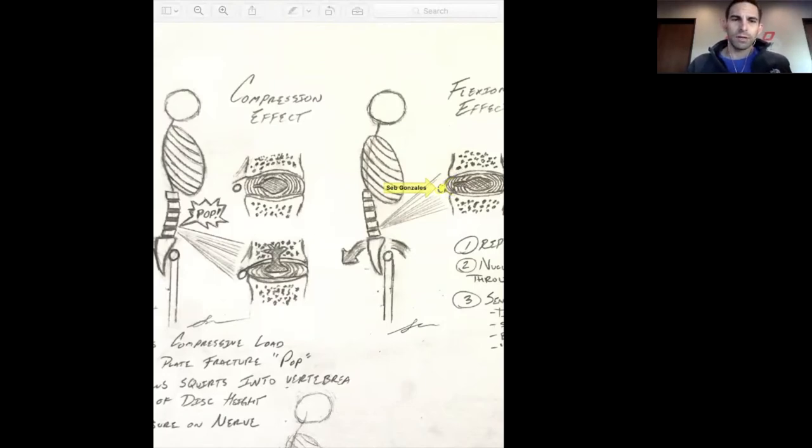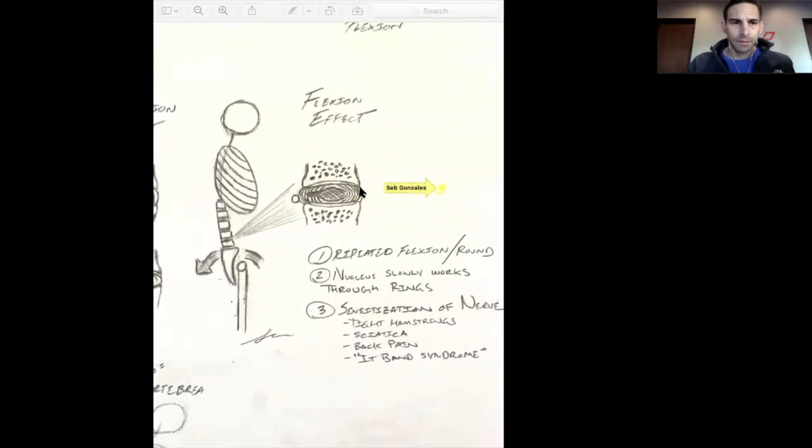So, that physical pressure on it can create pain. And we're going to just highlight a couple parts right here which create this thing again, because this is important to realize. Repeated flexion and rounding. I know people call different things, but rounding or having poor posture with sitting, walking, sleeping, or lifting can create these conditions right here. The nucleus slowly works its way through the rings, and then it sensitizes the nerve. You'll end up getting things like tight hamstrings, sciatica, back pain, and that phantom IT band syndrome right here, which is important, which I will have a graphic on coming later.